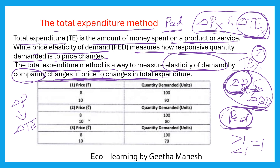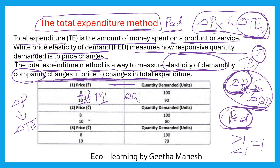First, let us understand the relationship between price and quantity. When price increases from 8 to 10, quantity demanded decreases. Price has increased and quantity demanded has decreased.